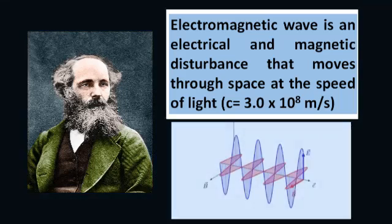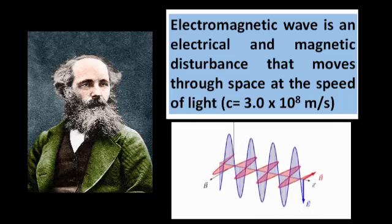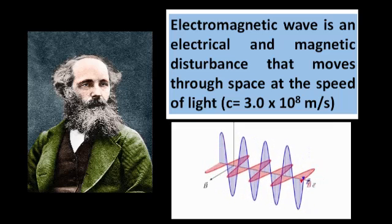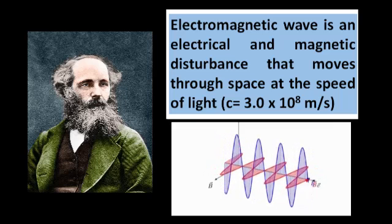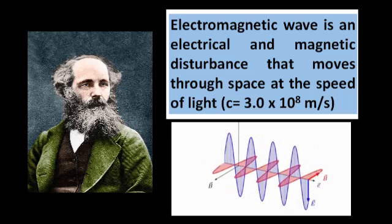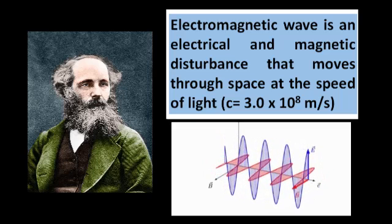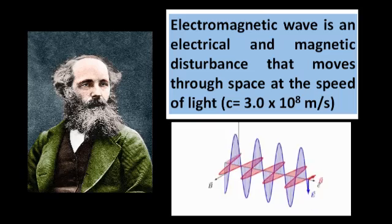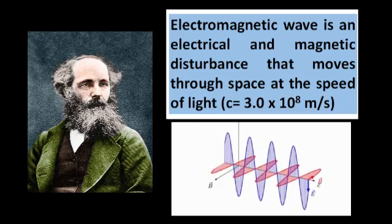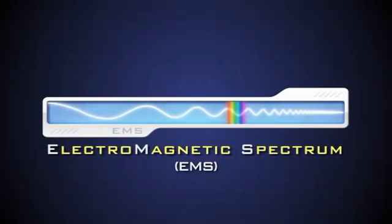According to Maxwell, an electromagnetic wave is an electrical and magnetic disturbance that moves through space at the speed of light, equivalent to 3.0 × 10^8 meters per second, or 300 million meters per second.